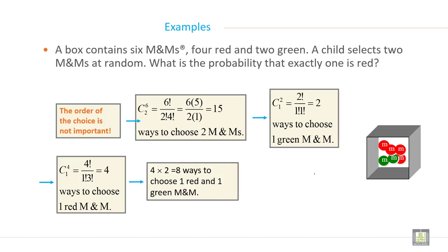Examples. A box contains 6 M&M balls, 4 red and 2 green. A child selects 2 M&Ms at random. What is the probability that exactly 1 is red?